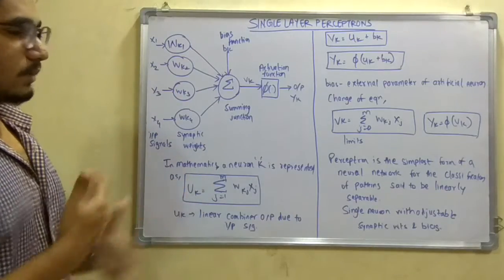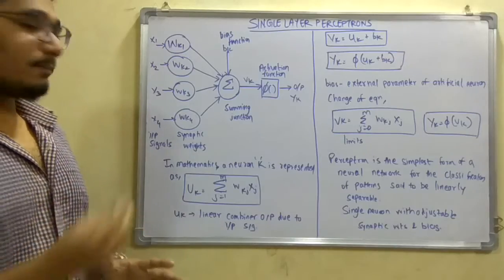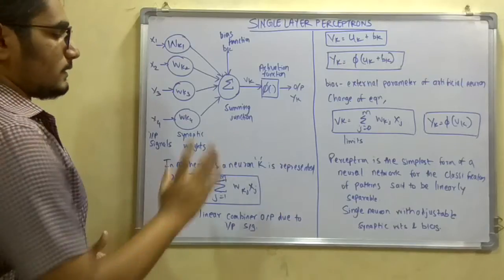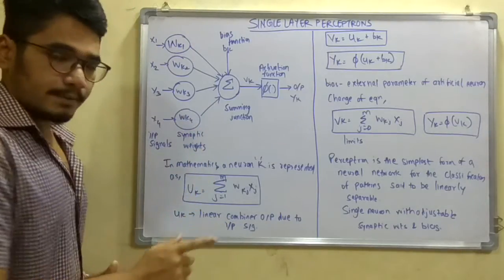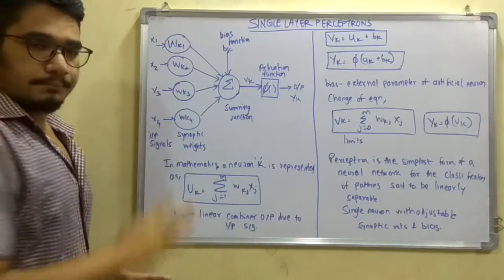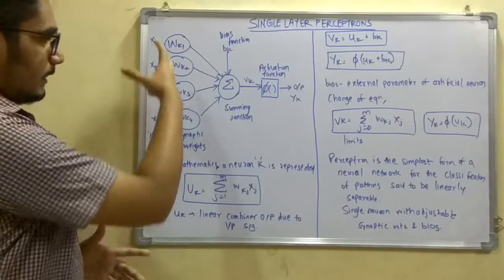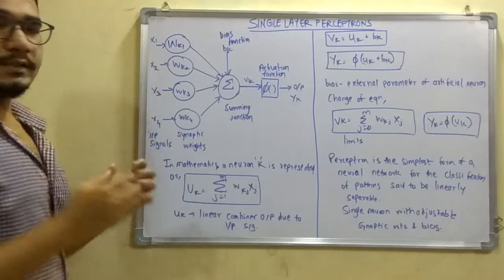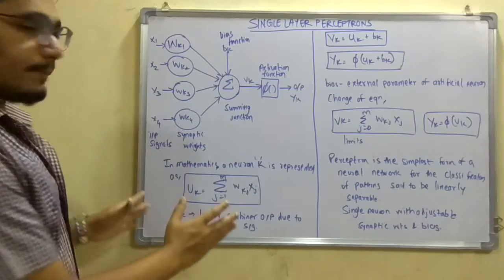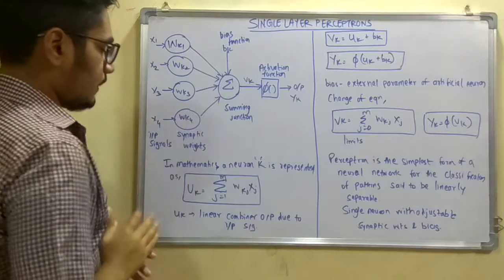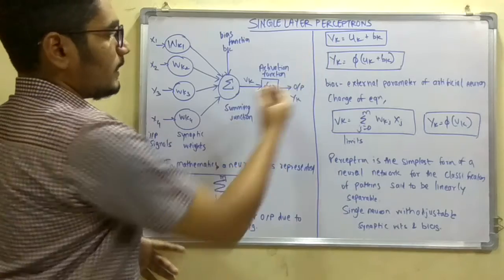This model is called a perceptron. We can further simplify it. In mathematical terms, a single neuron k is represented as: uk equals the summation from j=1 to m of wkj multiplied by its input signals xj. Here uk is a linear combiner of all input signals — the input signals must be strong enough to generate the trigger. The next function is vk, which equals uk plus bk, the bias function. The final output is yk.